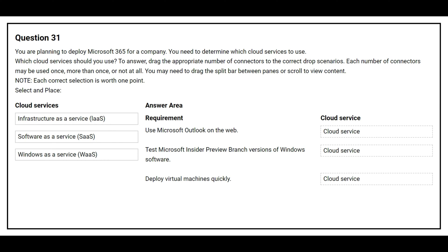Question number 31. You are planning to deploy Microsoft 365 for a company. You need to determine which cloud services to use. On the left side you have the cloud services, on the right side you have the requirement, and you need to choose the correct cloud service. The first requirement is: use Microsoft Outlook on the web. The correct cloud service is Software as a Service.